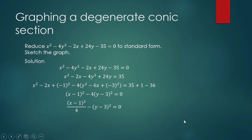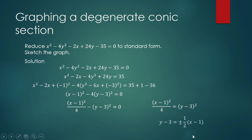Since this is a degenerate case of a hyperbola — a pair of intersecting lines — we separate the two terms and solve for y minus 3 by taking the square root. The square root gives plus or minus one-half times (x minus 1). So the two line equations are: y minus 3 equals one-half times (x minus 1), and y minus 3 equals negative one-half times (x minus 1).